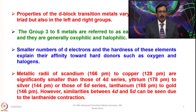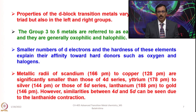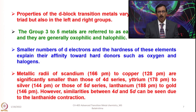The metallic radii of scandium to copper vary significantly, from 166 pm to 128 pm, and this is smaller than those of the 4D series; for example, yttrium starts at 178 pm and silver at 144 pm. The 5D series starts with lanthanum at 188 pm and gold at 146 pm. However, the similarities between 4D and 5D can be seen due to lanthanide contraction, which I shall explain later.